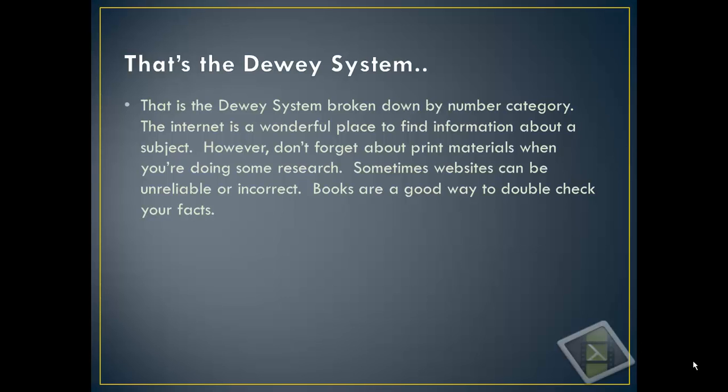That's pretty much the Dewey system — it's broken down by number category so that any type of nonfiction book you're looking for can be easily found if you understand it. Remember, the internet is a wonderful place to find information, but don't forget about print materials when you're doing research. Some websites out there are unreliable or not credible — the person maybe didn't do the research or just typed in some stuff. Books aren't like that, because books have to be edited and their resources checked, so they might be a little more reliable. Even in the day and age where we can access the internet from our phones, books and print materials are still out there to help you. Good luck and happy hunting!